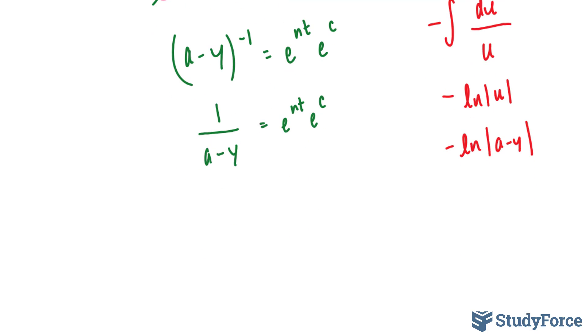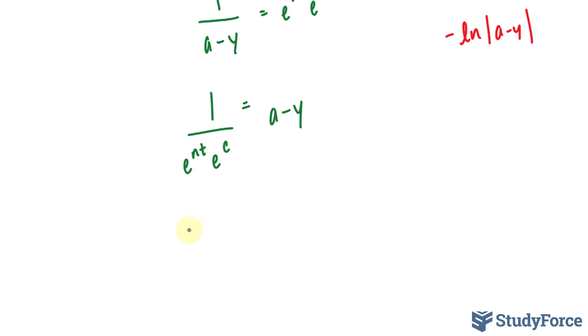Multiplying both sides by a minus y gives me 1 on the left side. And dividing both sides at the same time by e to the power of nt, e to the power of c gives me e to the power of nt at the bottom, e to the power of c. And on the right side, a minus y. I can flip this into e to the power of negative nt, e to the power of negative c, a minus y.